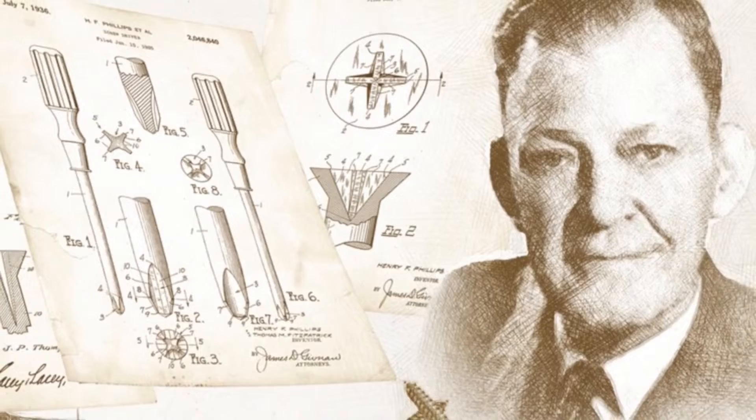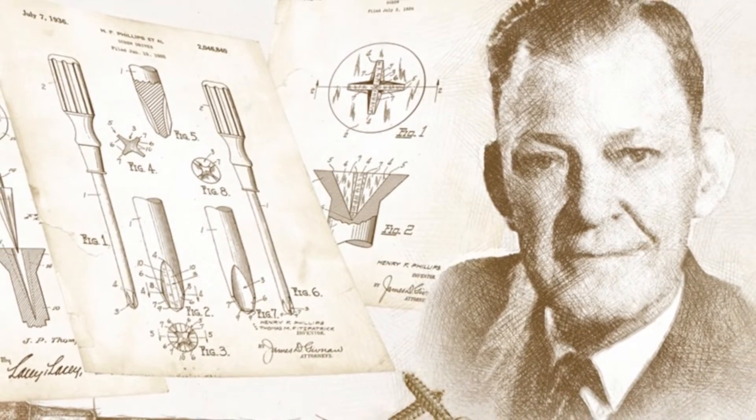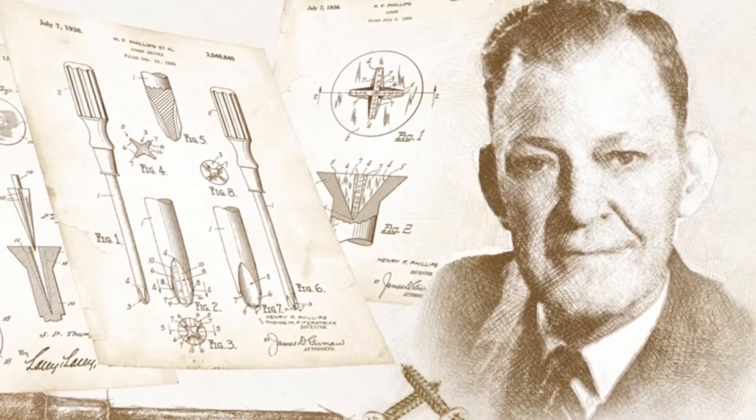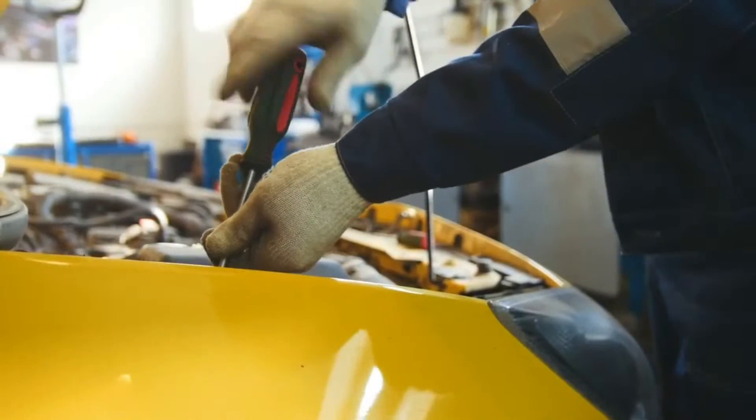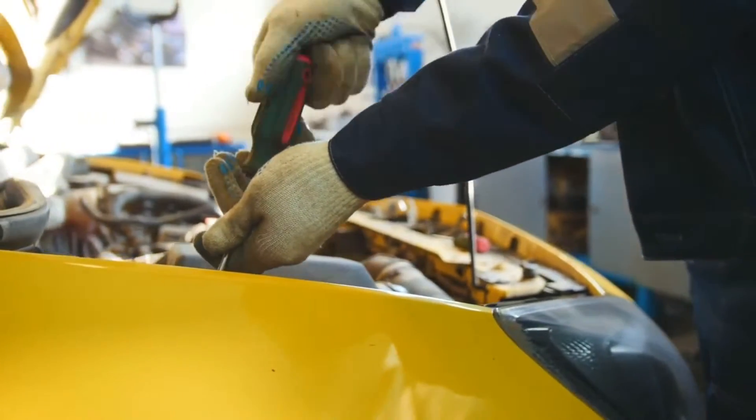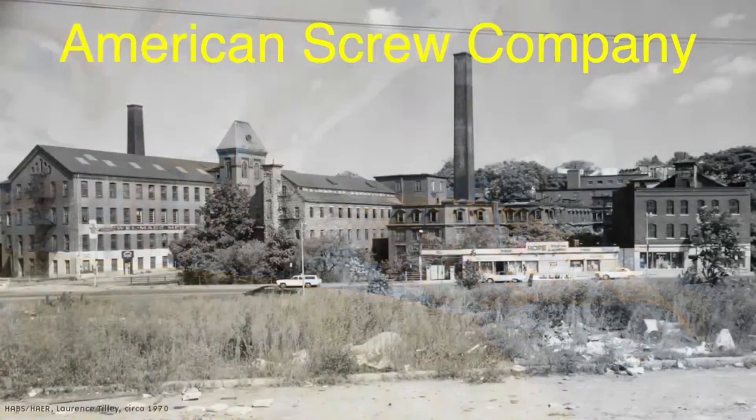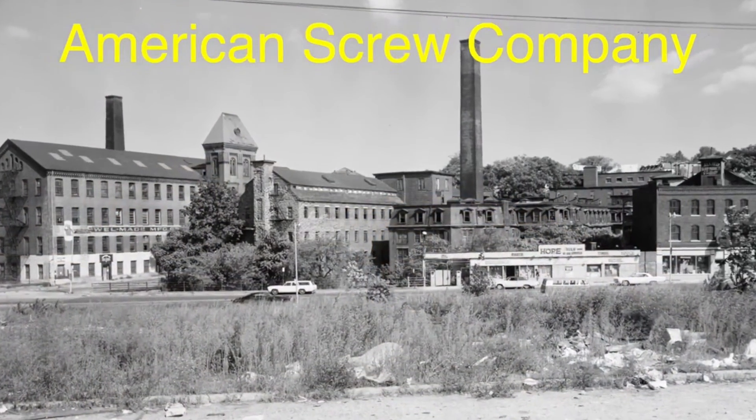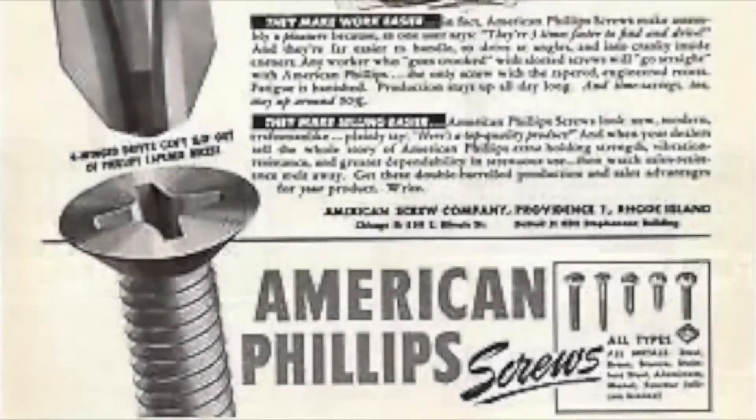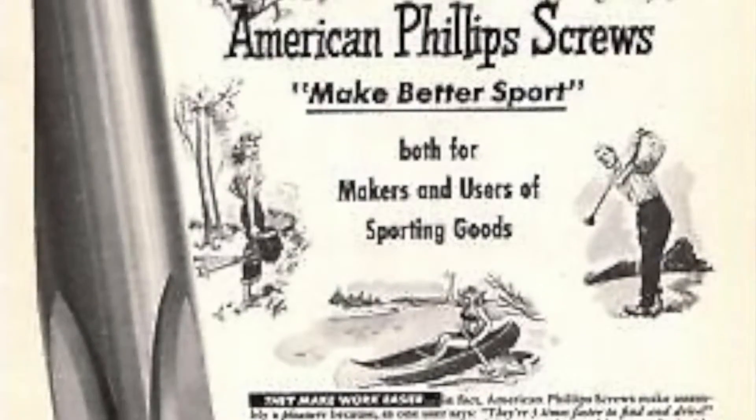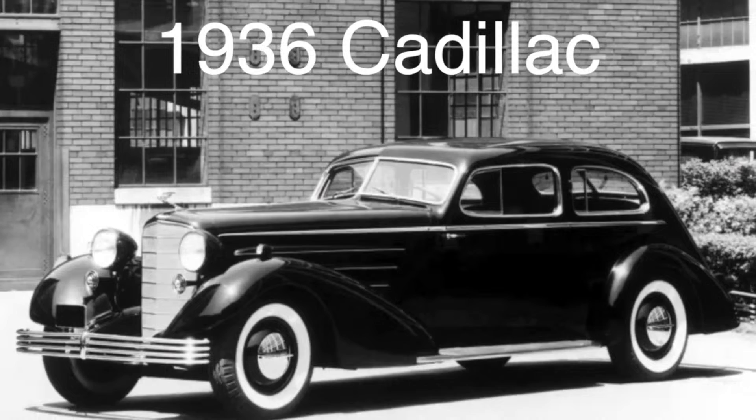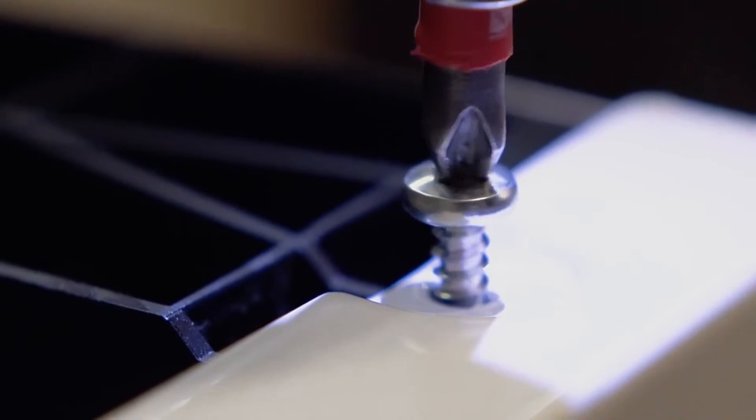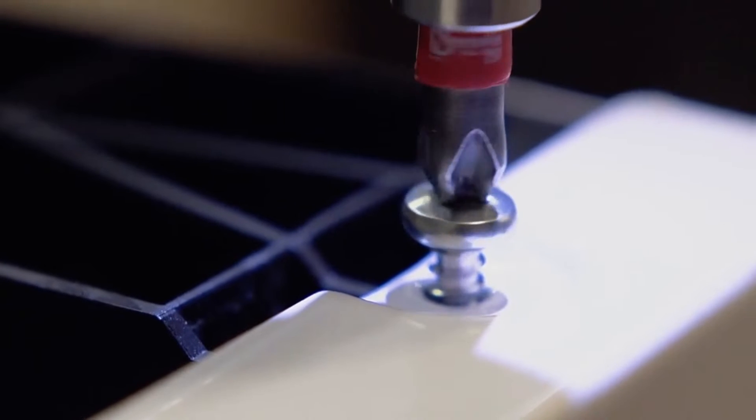Henry F. Phillips wasn't an inventor, but he was a savvy entrepreneur. He understood that for the cross-head screw to be successful, it needed to be adopted by the automotive industry, which was booming at the time. Phillips approached the American Screw Company and convinced them to produce the new screw and driver. His persistence paid off when General Motors decided to use Phillips screws in the production of their 1936 Cadillac. The results were impressive. The new screws reduced assembly time and increased efficiency on the production line.